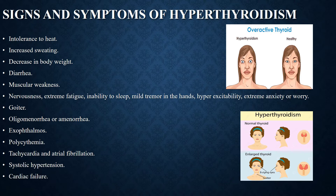Let's look into the signs and symptoms of hyperthyroidism. Intolerance to heat is a common symptom, because the body produces a lot of heat due to increased basal metabolic rate caused by excess thyroxine. Increased sweating occurs due to vasodilation (widening of blood vessels). Body weight decreases due to fat mobilization. Increased mobility of the gastrointestinal tract causes diarrhea. Excess protein catabolism causes muscular weakness. Symptoms like nervousness, extreme fatigue, inability to sleep, mild tremor in the hands, and psychoneurotic symptoms such as hyper-excitability and extreme anxiety are very common in hyperthyroidism. All these symptoms are due to excess stimulation of neurons in the central nervous system.